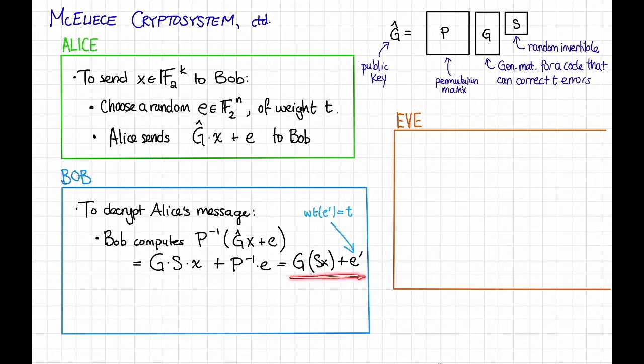At this point, Bob can use the fact that G is the generator matrix for a code that is efficiently able to correct up to T errors. Because when we look at this, we see that this is actually just a corrupted code word. The message is S times X. We've corrupted it with these T errors from E prime.